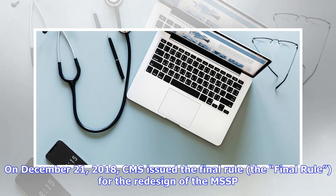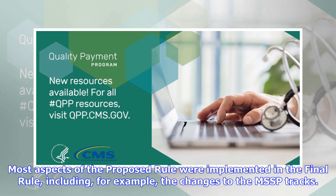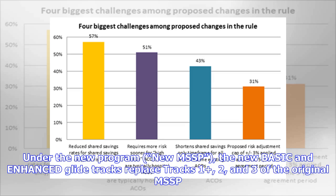On December 21st, 2018, CMS issued the final rule for the redesign of the MSSP. Most aspects of the proposed rule were implemented in the final rule, including changes to the MSSP tracks. Under the new program — the new MSSP — the new Basic and Enhanced glide tracks replace Tracks 1, 2, and 3 of the original MSSP.